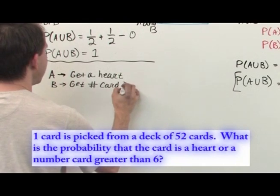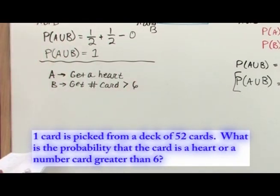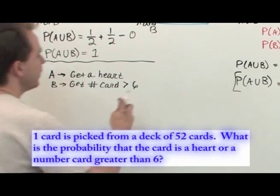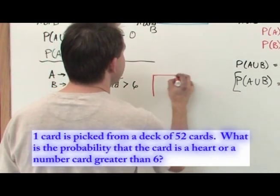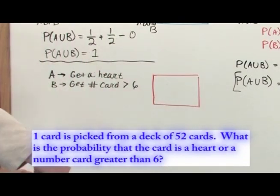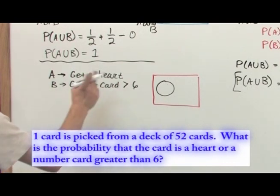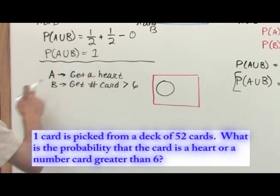Before we actually go any further, let's draw a Venn diagram to kind of help you visualize what's going on. Event A is right here, which is getting a heart.